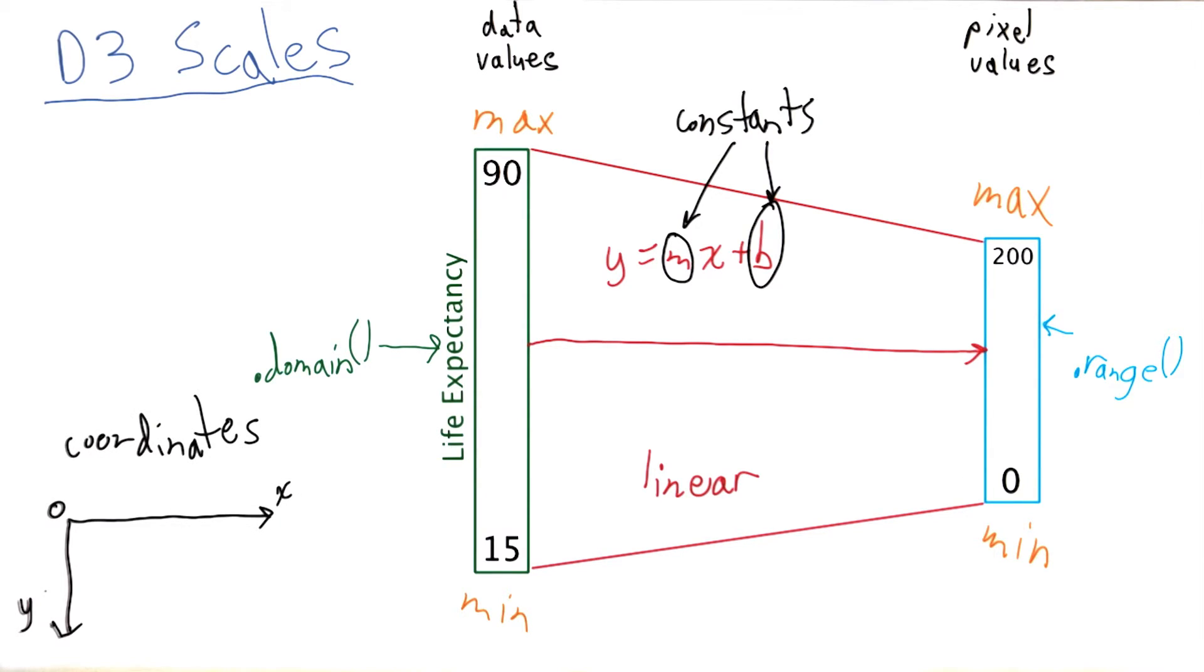One last quirk I want to cover is that the coordinate plane in the SVG in the web page actually has a value of 0 at the top left. And as you go out right from that origin, x values are increasing. And as you go down from the origin, y values are increasing. So a value of 0 actually corresponds to the upper left. And a y value of 200 actually will correspond to the bottom of our SVG element.